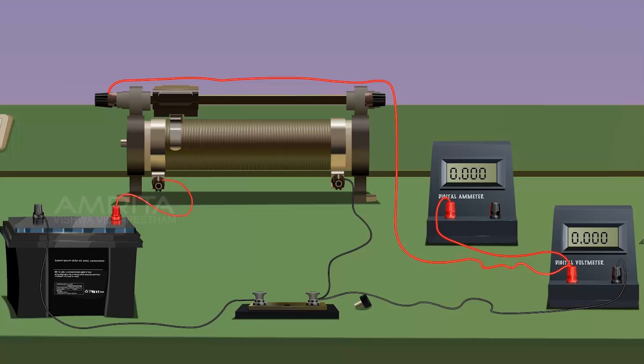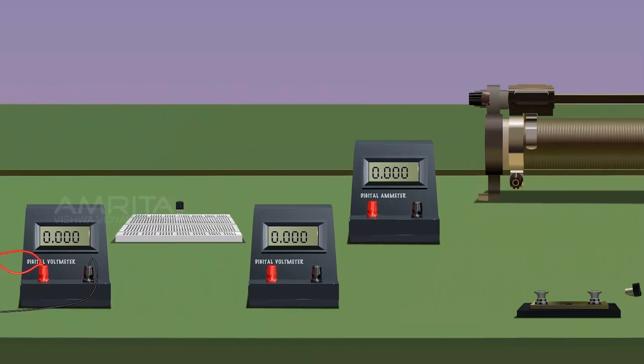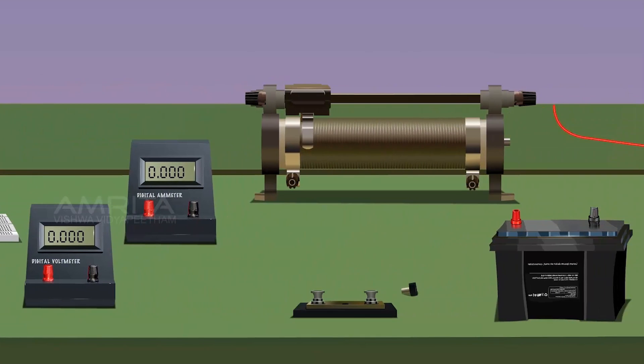Connect the lower end of the rheostat RH2 to the positive terminal of the cell E2. The negative terminal of the battery is connected to the other lower terminal of the rheostat.